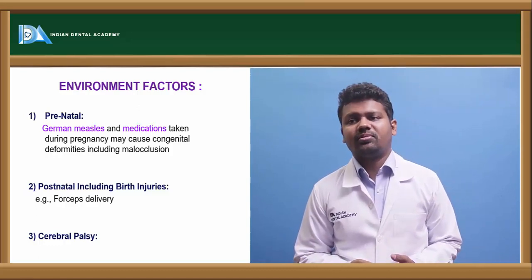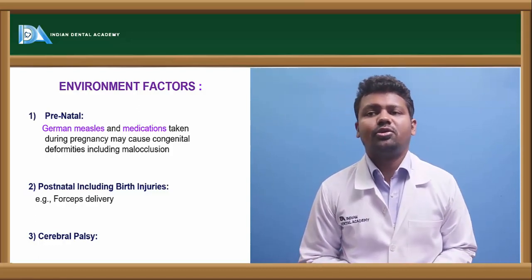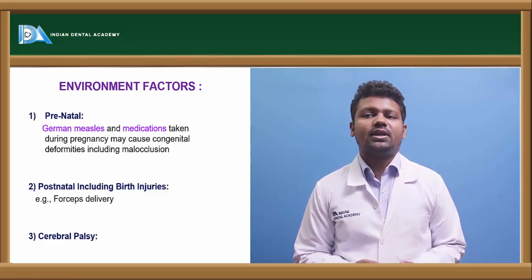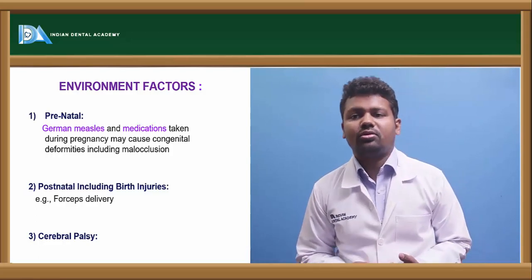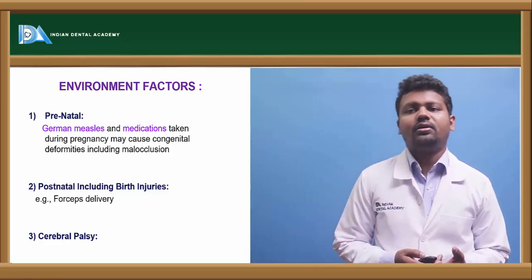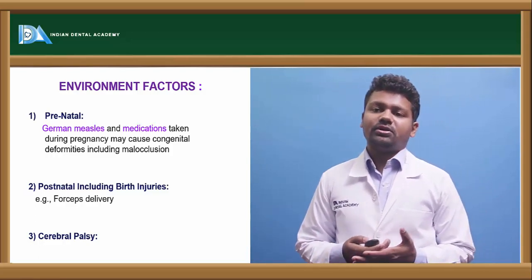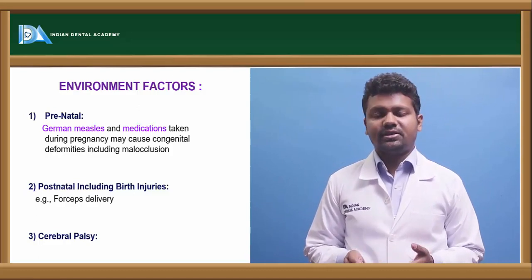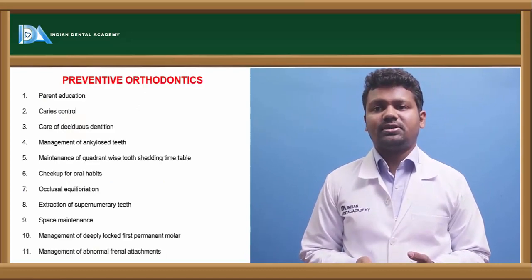German measles and medications taken during pregnancy may cause congenital deformities including malocclusion. Postnatal factors include birth injuries, forceps delivery, and cerebral palsy.